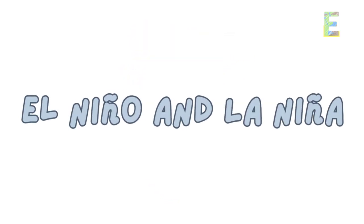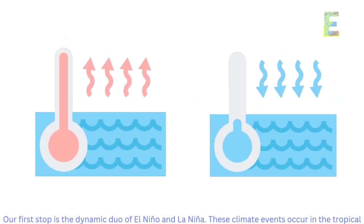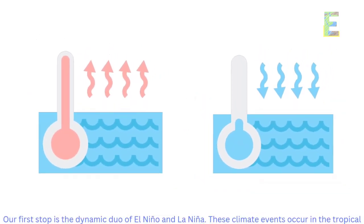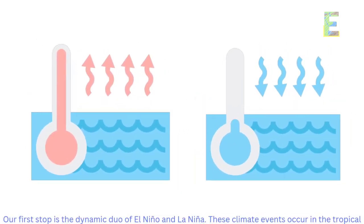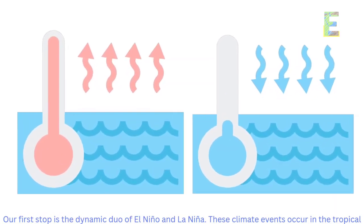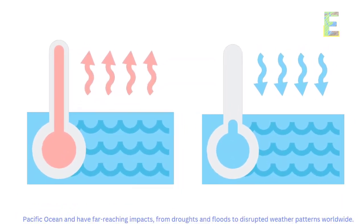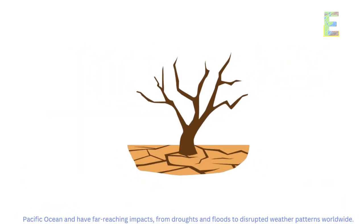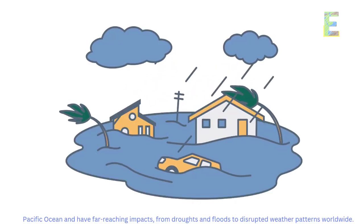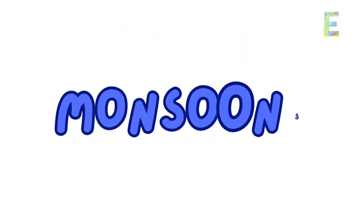El Niño and La Niña — our first stop is the dynamic duo of El Niño and La Niña. These climate events occur in the tropical Pacific Ocean and have far-reaching impacts, from droughts and floods to disruptive weather patterns worldwide.